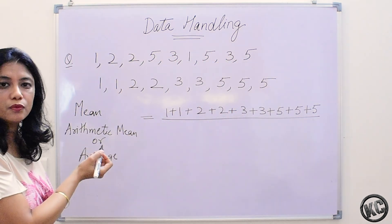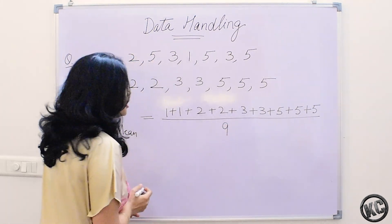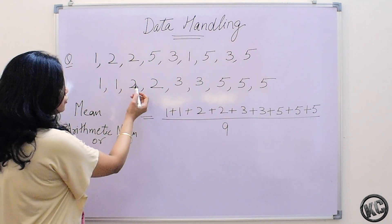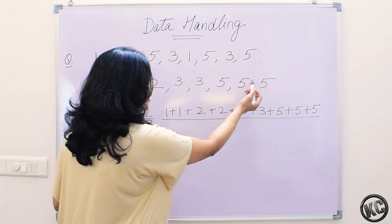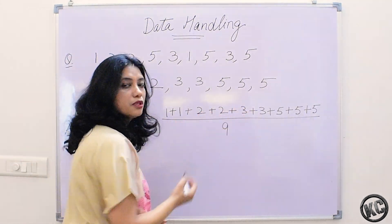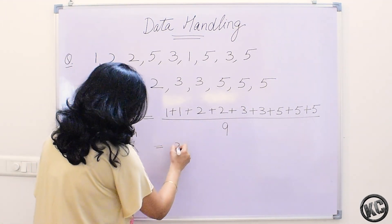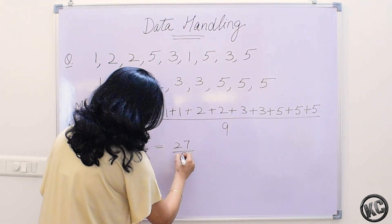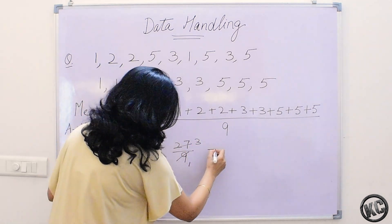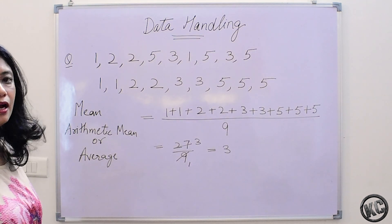Mean equals the sum of all observations divided by the number of observations. The number of observations here are 9. So we will take the sum of all the observations. Here we have 27 divided by 9, which gives us 3. So 3 is the mean of this data.